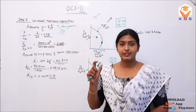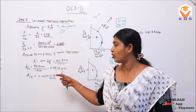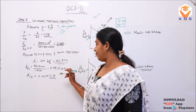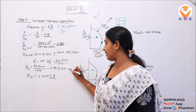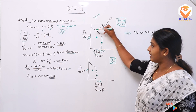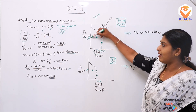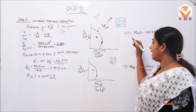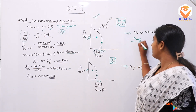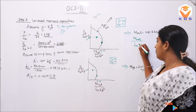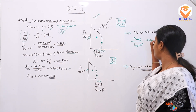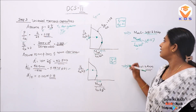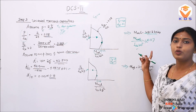Using D'/D = 0.1, we project the value in the chart. From the chart, MuXL/(FCK × B × D²) = 0.117. Cross-multiplying and solving: MuXL = 421.2 kNm.